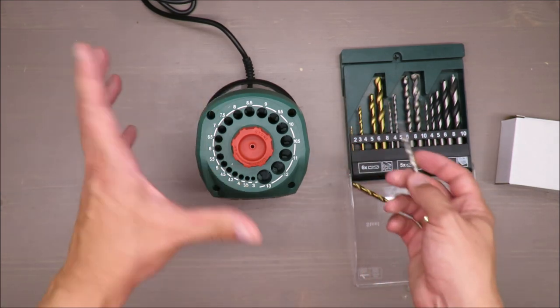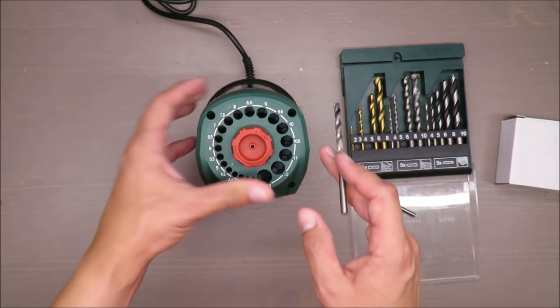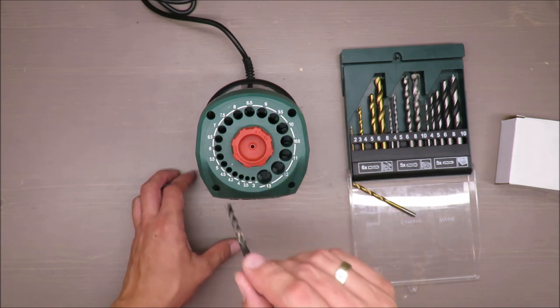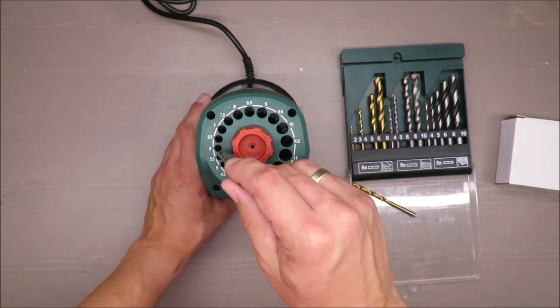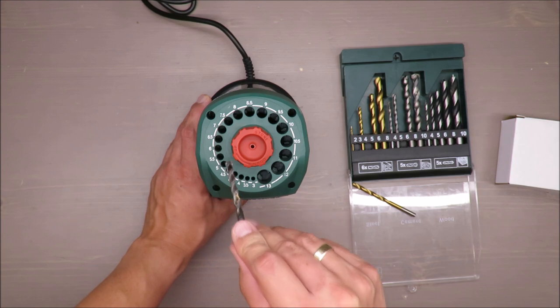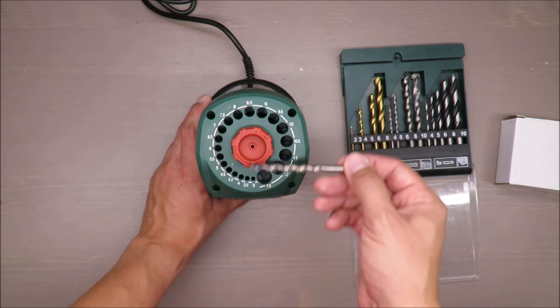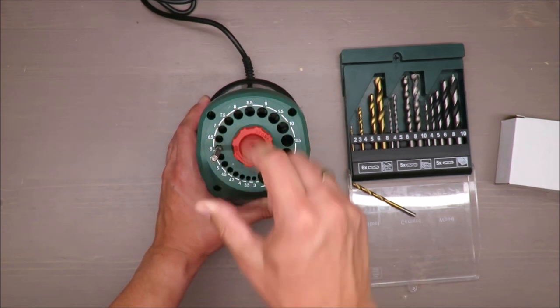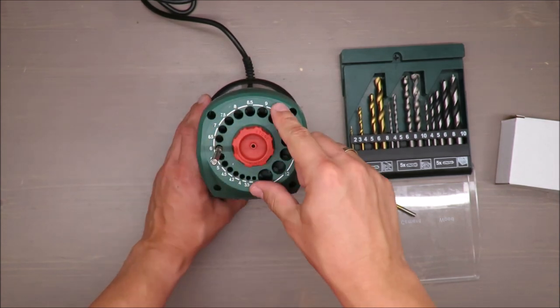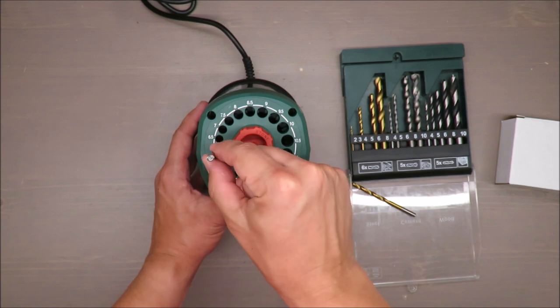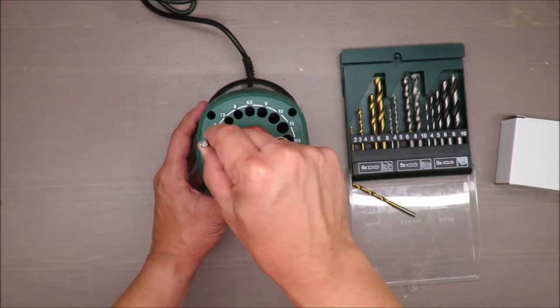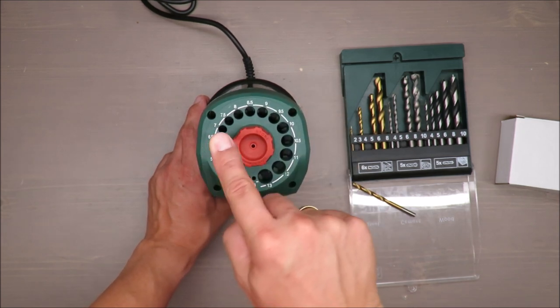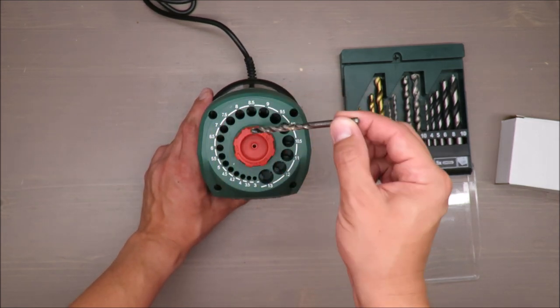Okay, the size is six, and now I will try to sharpen the six millimeter drill by using the hole with six millimeter diameter. I'm not able to touch the surface of the stone. Believe me, six and a half is the same. Seven...